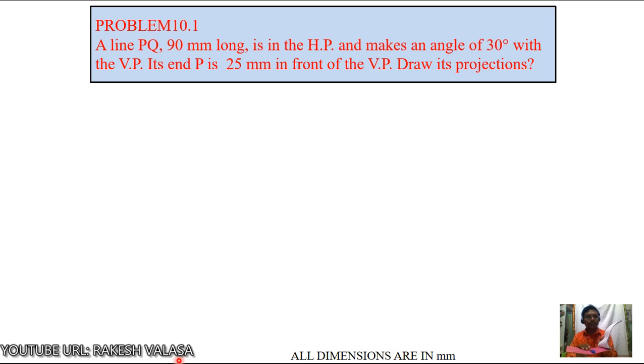Next, read the question. This line makes an angle of 30 degrees with VP. Just you can see here. I am taking this side. You can see here. This is P and this is Q. At P, I am tilting this line. This is 30 degrees to VP.